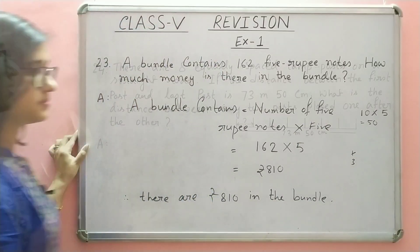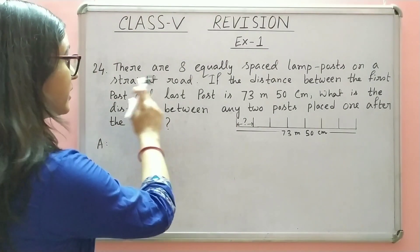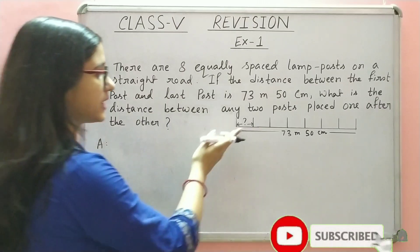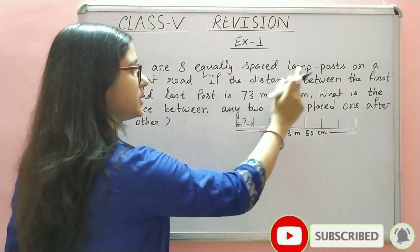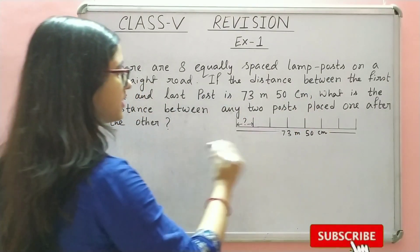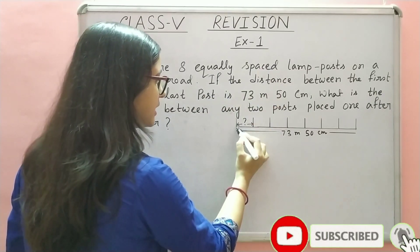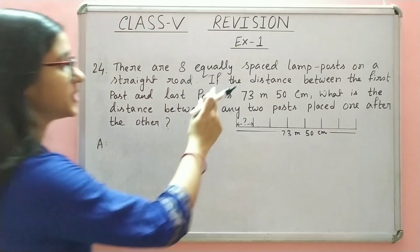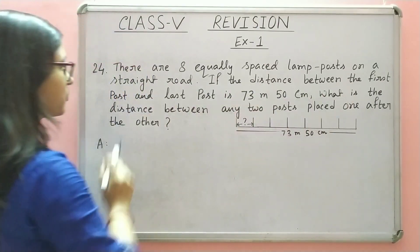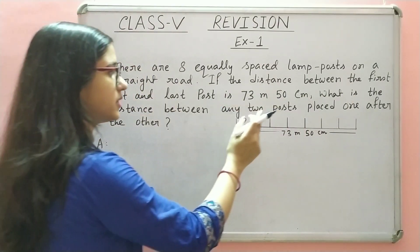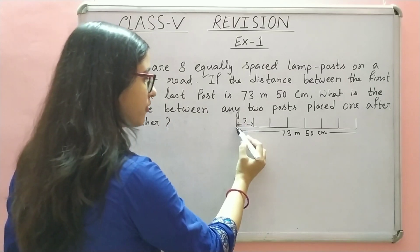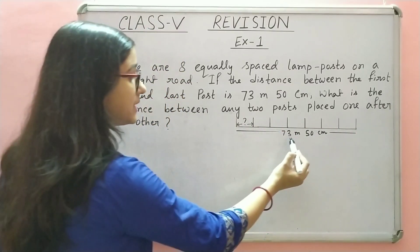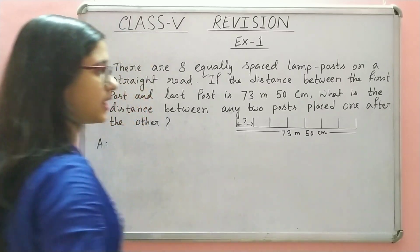Question number 24: There are 8 equally spaced lampposts on a straight road. Aik straight road pe 8 equally spaced lampposts hai. Equally spaced means yeh jo space hai, yeh equal hai. If the distance between the first post and last post is 73 meter 50 centimeter. First post aur last post ki beech ka jo distance hai, wo 73 meter 50 centimeter hai.